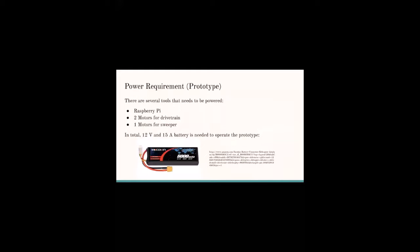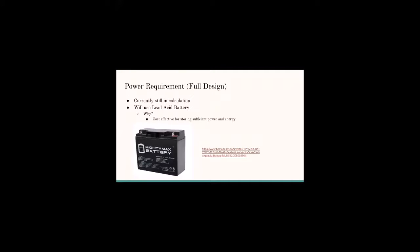Moreover, I am also working on the power calculation for the prototype and full design. For the prototype, to power all Raspberry Pi, two drivetrain motors, and one sweeper motor, the prototype approximately needs about 12 volts and 15 ampere. In that case, an 11.1 volt lithium polymer 6 ampere per hour with 100C battery was chosen to power the prototype. An additional 5-volt regulator was also used to make sure that the Raspberry Pi is not overpowered. For the full design, the power needed will still be calculated as the central processing board is still to be determined. This calculation is approximately done within this week and a sufficient battery will be found. However, the full design will most likely use lead-acid battery as it is cost-effective for storing sufficient power and energy.